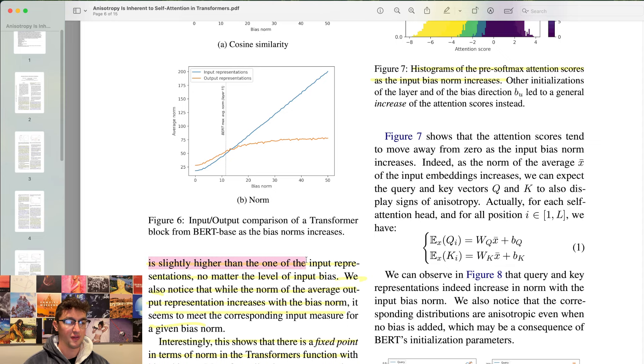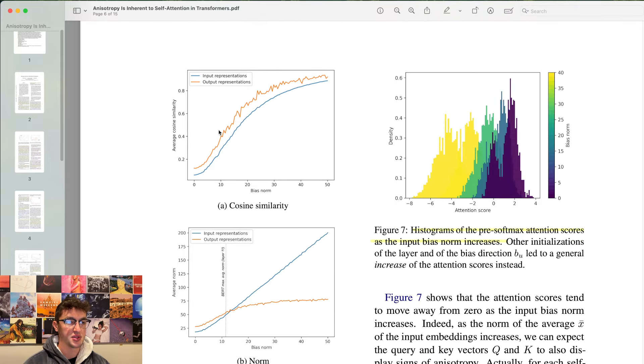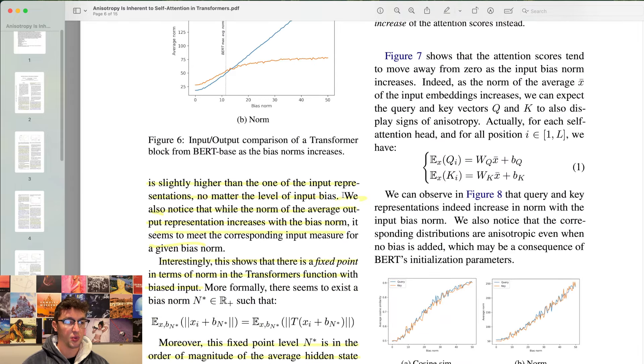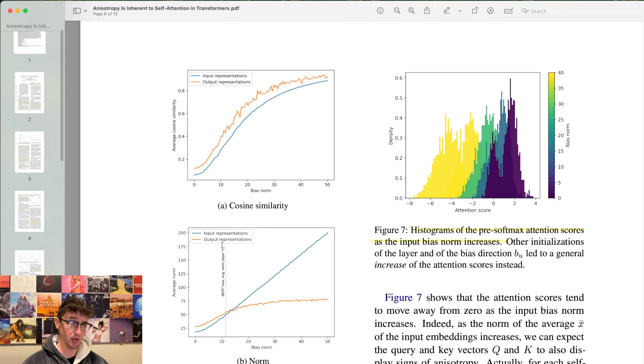In figure 6a, we observe that the output representations have an average cosine similarity value that is slightly higher than the one of the input representations, no matter the level of input bias. So we see input, blue line, output, orange line representations. The bias norm on the bottom, average cosine similarity on the top. So it seems like outputs has larger correlation, has more cosine similarity per bias norm than the inputs.